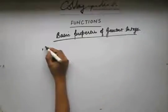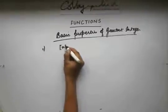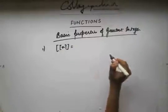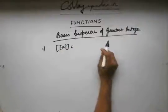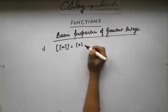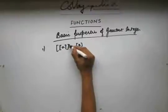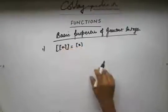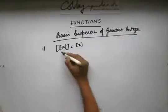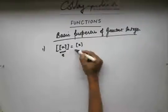The first property is box(box(x)) = box(x). This is because if you take box of x, you get an integer. And after that, if you take the box function again, it doesn't affect it. Because box of an integer is itself the same integer. So this is an integer — if you take a box of that, you will get that integer again, which is box x.